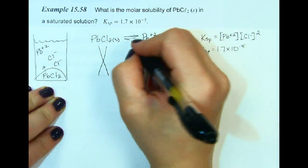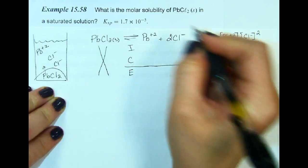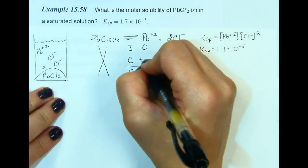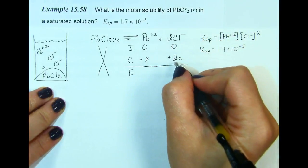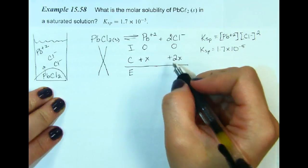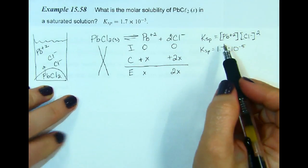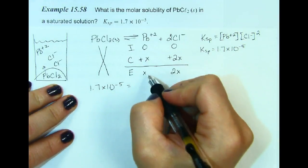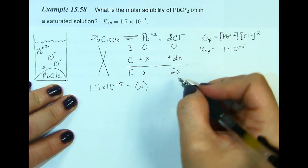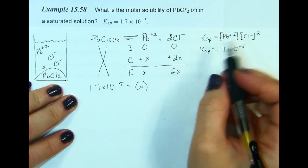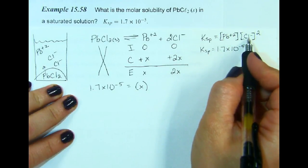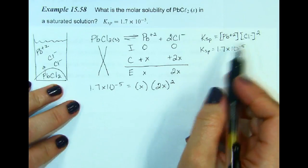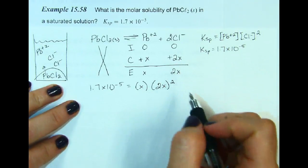Drawing the ICE table — not including the solid. We start with 0 of both ions. As dissolving occurs, the change is plus x for lead and plus 2x for chloride. So at equilibrium, lead is x and chloride is 2x. This is another reason why it's so important to get the coefficient correct. Setting up the law of mass action: 1.7 times 10 to the negative 5 equals x times (2x) squared. The most common mistake is not squaring this value as well as not including the coefficient in the ICE table.